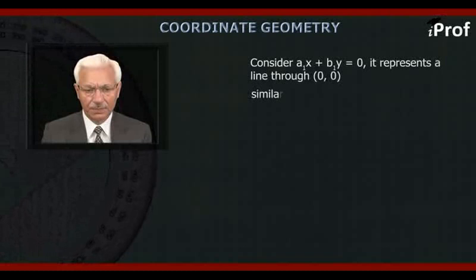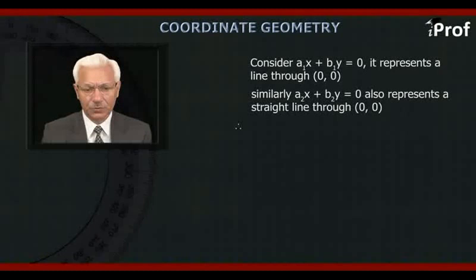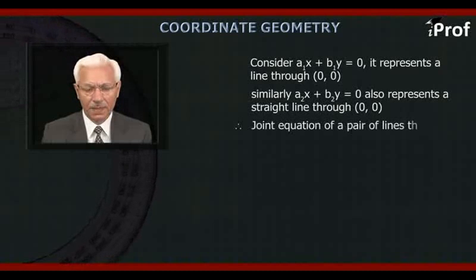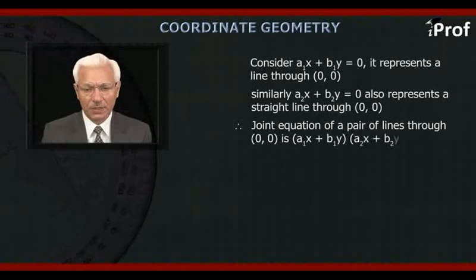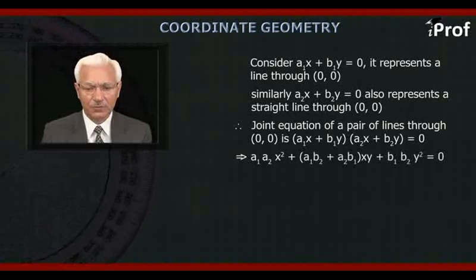Similarly, a₂x plus b₂y equal to 0 also represents a straight line through origin. A joint equation of a pair of lines through origin will be (a₁x + b₁y)(a₂x + b₂y) = 0, which will be simplified to a₁a₂x² + (a₁b₂ + a₂b₁)xy + b₁b₂y² = 0.